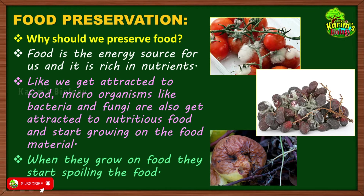You can see the condition of the food material here. These are fresh tomatoes spoiled by the growth of fungus, these are grapes spoiled by the growth of fungus, and there is an apple rotten by the growth of microorganisms. This is what microbes do to food when they grow on them. When this happens, we can no longer consume the food that is spoiled.